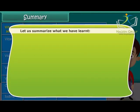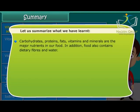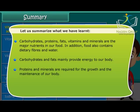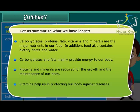Let us summarize what we have learned. Carbohydrates, proteins, fats, vitamins and minerals are the major nutrients in our food. In addition, food also contains dietary fibers and water. Carbohydrates and fats mainly provide energy to our body. Proteins and minerals are required for the growth and maintenance of our body. Vitamins help us in protecting our body against diseases.